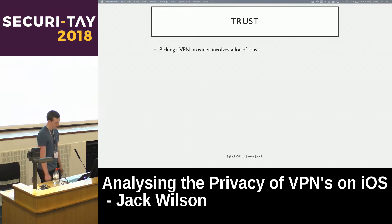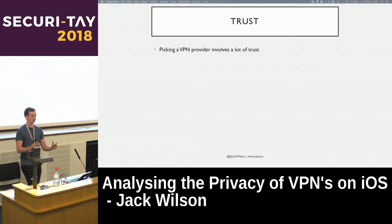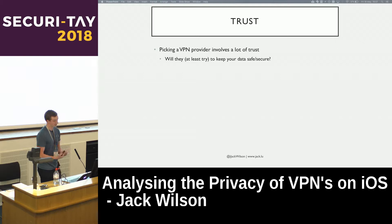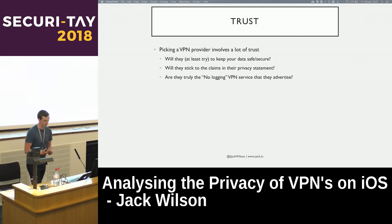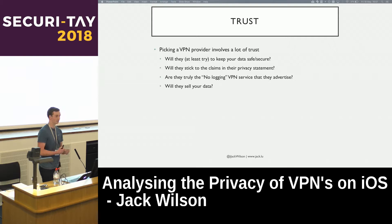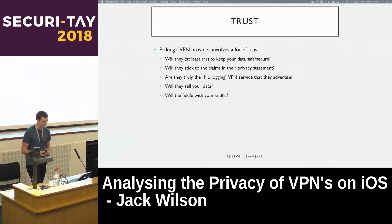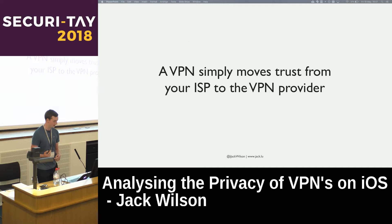When you pick a VPN it involves a lot of trust, because what you're doing is giving all of your traffic to the VPN provider. So are they going to keep your data safe? Are they going to stick to their privacy statements? Are they truly the no-logging VPN they're advertising? Are they going to sell your data to ad agencies or inject JavaScript and ads into your traffic? That's all a VPN does — it moves your trust from your ISP to the VPN provider. If you don't trust them, what's the point?